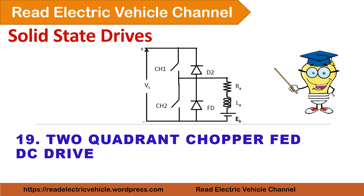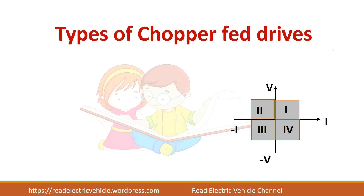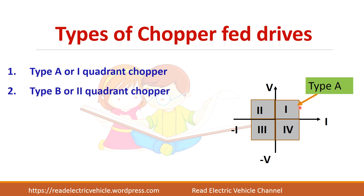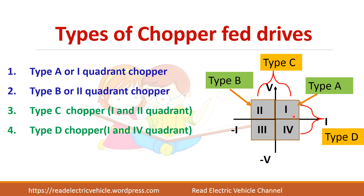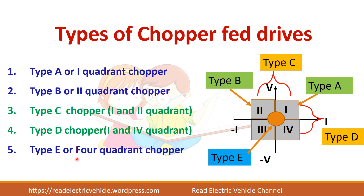In this video, let us see about the two quadrant chopper fed DC drive. There are different types of chopper fed drives. We know there are four quadrants and the chopper can be made to operate in one quadrant, two quadrants, or all four quadrants. Type A chopper operates in the first quadrant, type B in the second quadrant, type C in first and second quadrant, type D in first and fourth quadrant, and type E in all four quadrants.